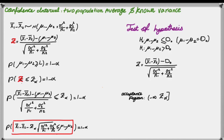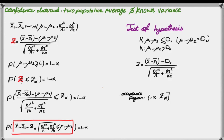The acceptance region is from negative infinity to z of alpha. If I calculate z and put my hypothesized value d0 into this term, I want it to fall less than z of alpha, giving the region from negative infinity to z of alpha. If asked to test a one-sided hypothesis using a confidence interval, you must find a confidence interval matching your alternative test sign. If the alternative is mu1 minus mu2 greater than something, you need a lower bound for your confidence interval.